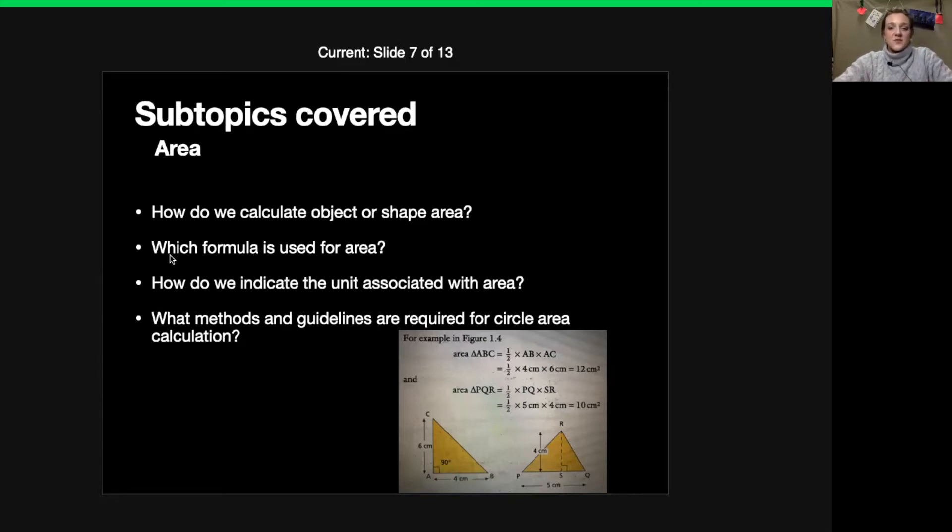So the formulas that we use for them will be length times breadth for rectangles and squares. Then if you look at the example down here we will also get a different one for triangles. So a half times AB times AC which will be if you look at this 90 degree triangle you will get AB which is 4 cm and AC which is 6 cm.